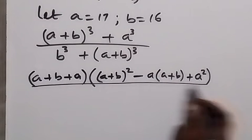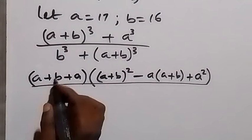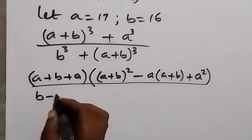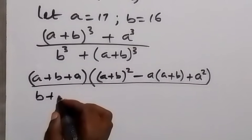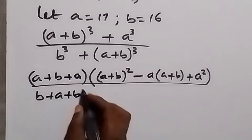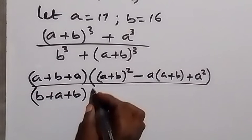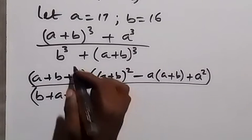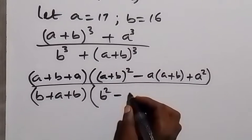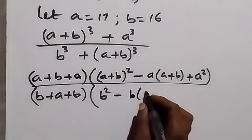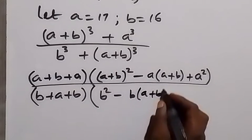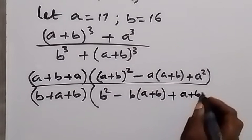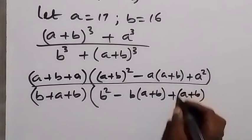And then divided by. Similarly here we have b plus a plus 2b, so we have b plus a plus b, then into bracket b squared, then minus b times a plus b — that's b into bracket a plus b — then plus a plus b squared.